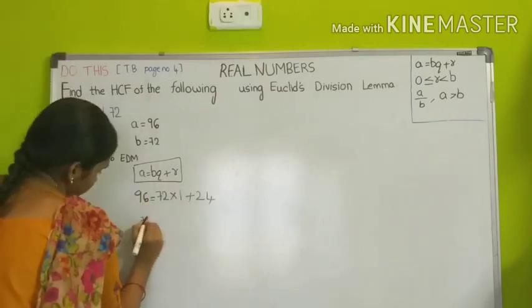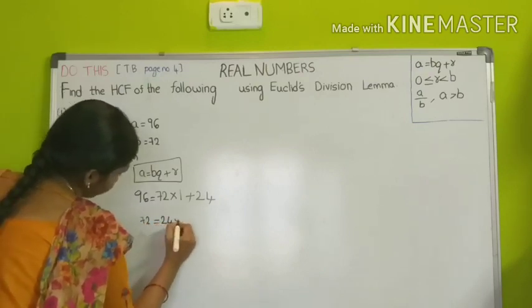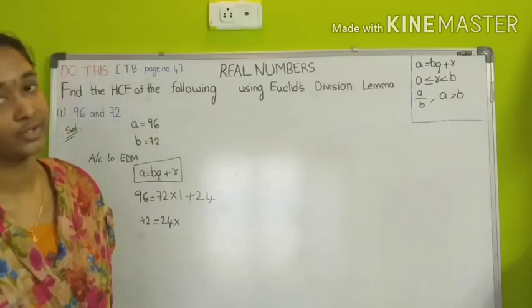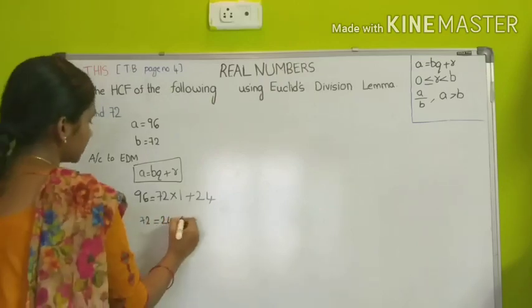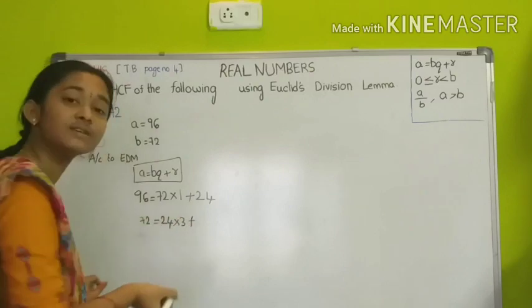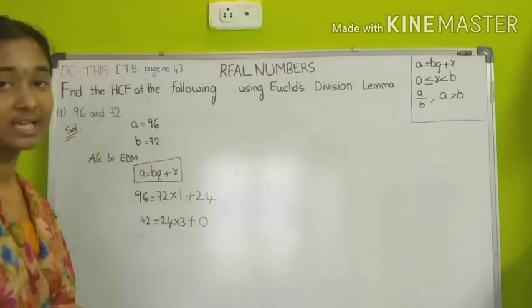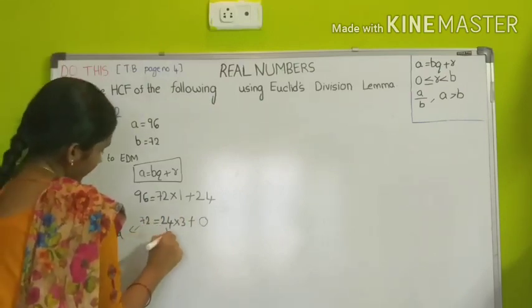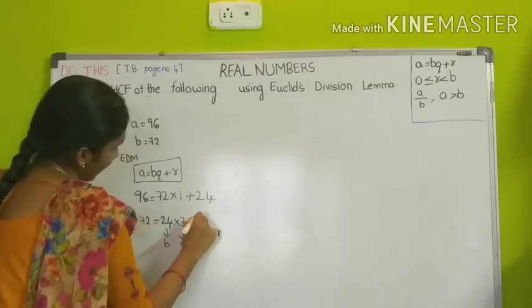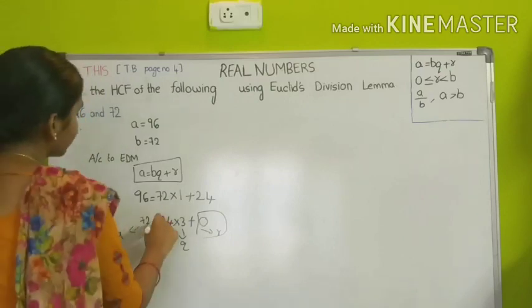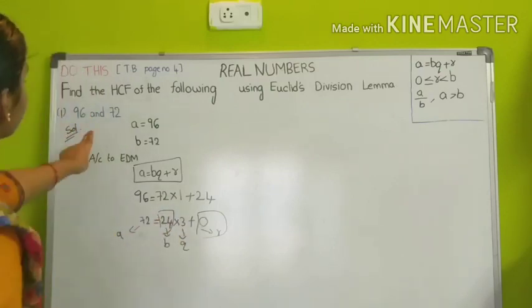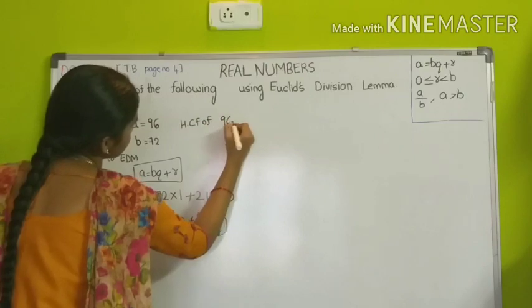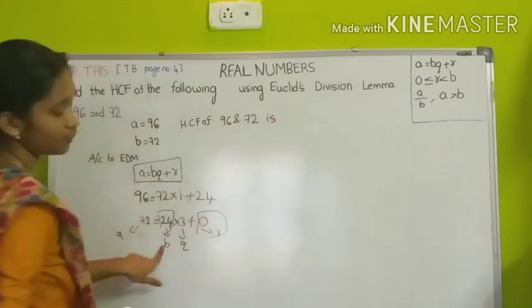We write 72 as the greater number and 24 as the divisor. 24 ones are 24, 24 twos are 48, 24 threes are 72 — so directly 24 into 3 is 72. 72 minus 72 is 0, so the remainder became equal to 0. We identify: A is 72, B is 24, Q is 3, and R is 0. Since the remainder became 0, the value of B, which is 24, becomes the HCF. So the HCF of 96 and 72 is 24.